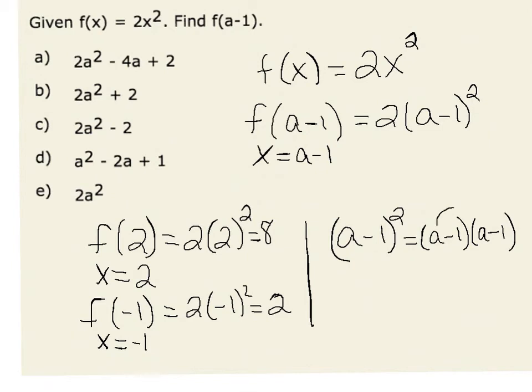we would see that we first have a squared, or a times a, times a times a negative 1, or a negative a, and a negative 1 times a, or another negative a. Finally, we have negative 1 times a negative 1, or a positive 1.